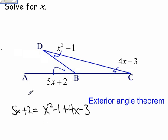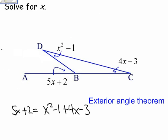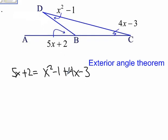So this is going to result in a quadratic equation. Let's go ahead and work it out. We're going to combine the like terms here and here. That's going to get us 5x plus 2 equals x squared plus 4x minus 4.